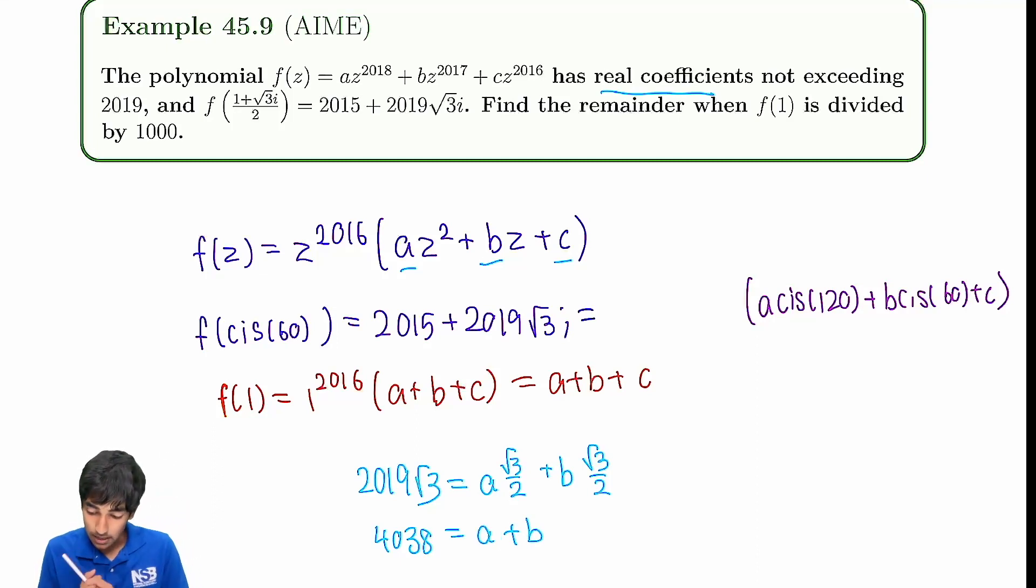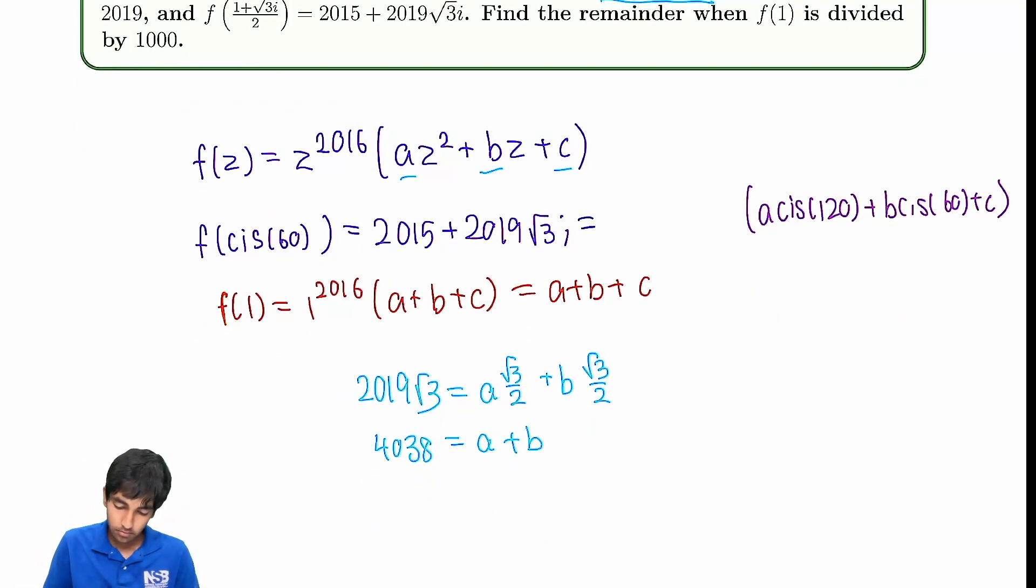So now multiply by 2 over root 3 to this whole equation. We get 4038 equals a plus b. So we found a plus b. All we have to do now is find c. To do this, you look at the real part. 2015, a, cosine 120, which is negative half, plus b, cosine of 60, which is one half, plus c.